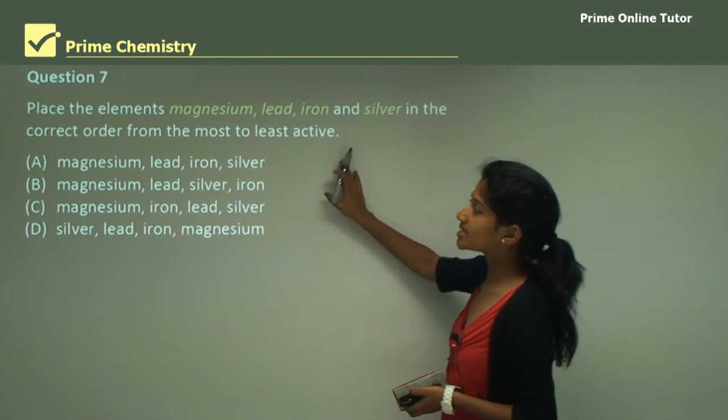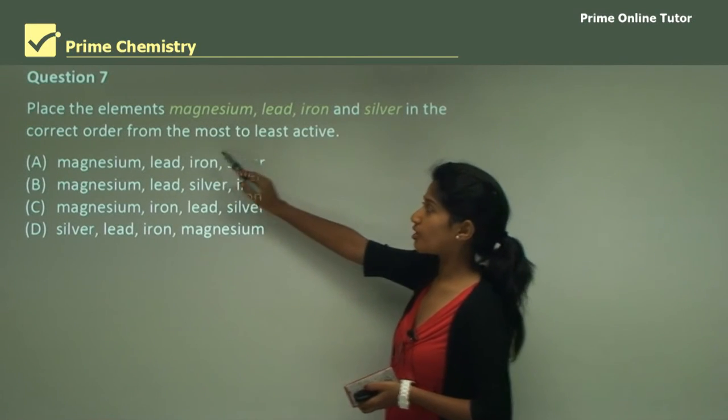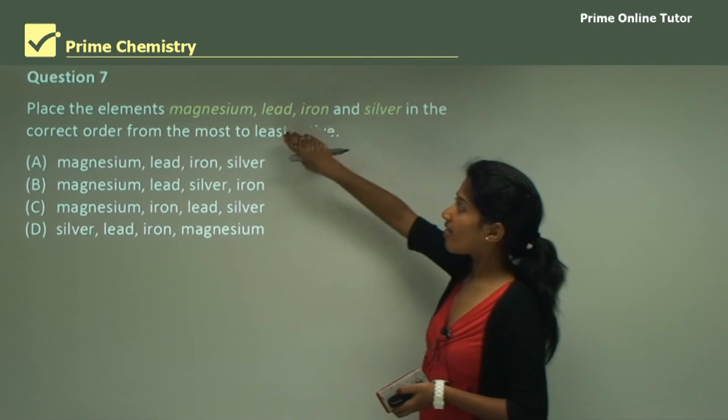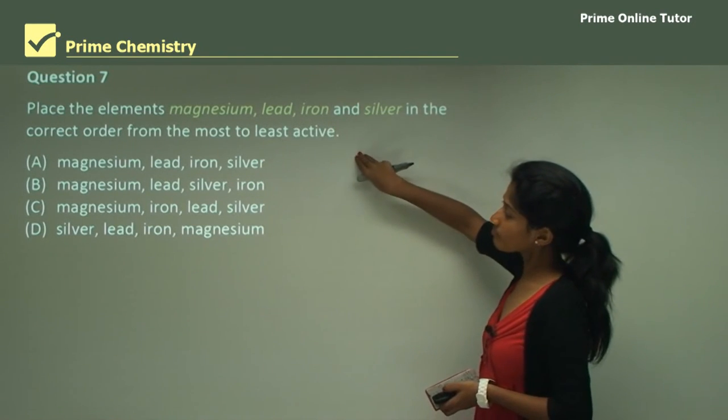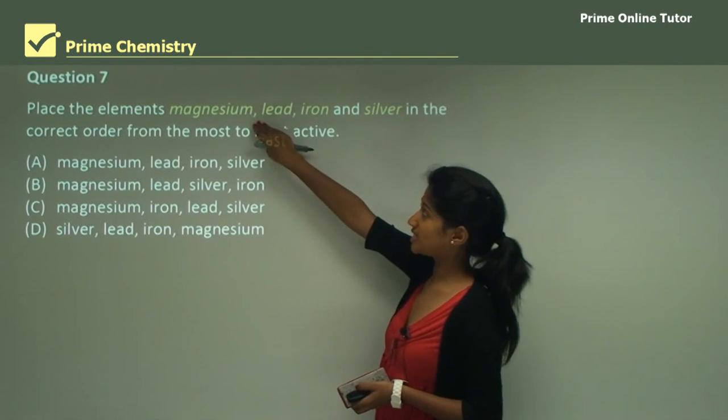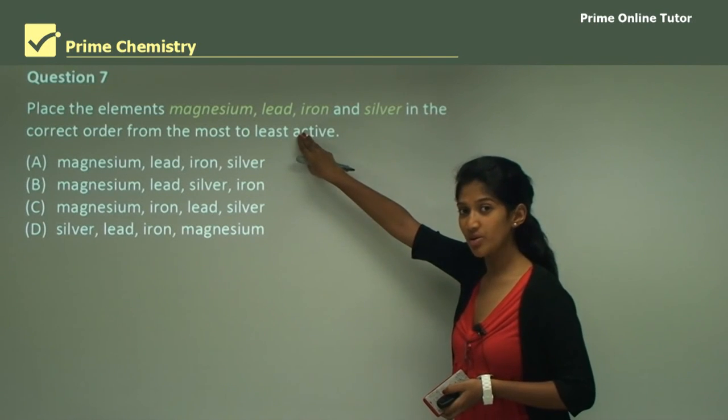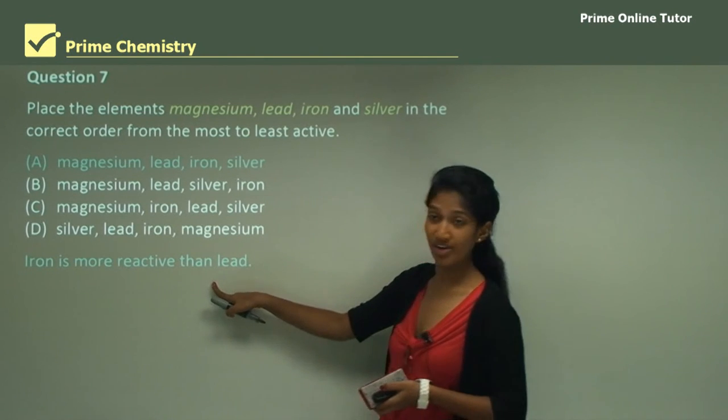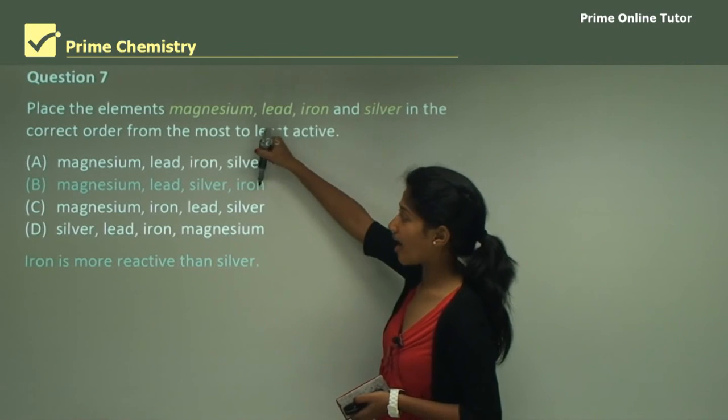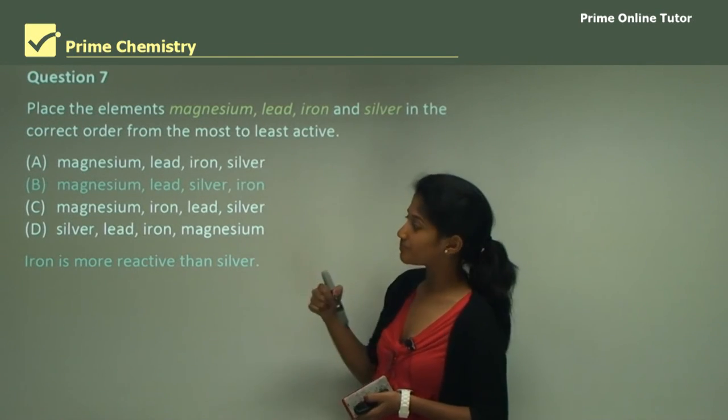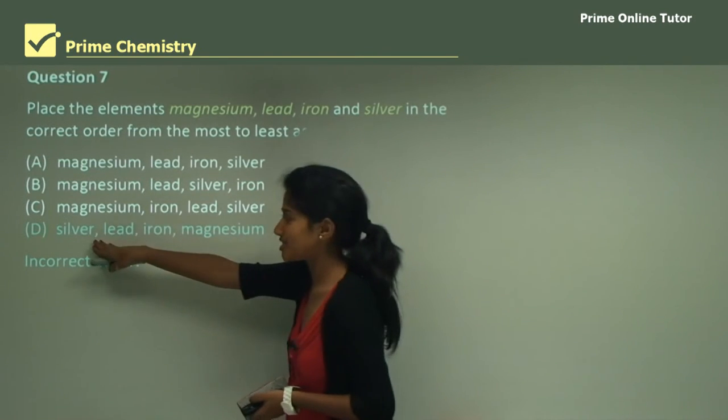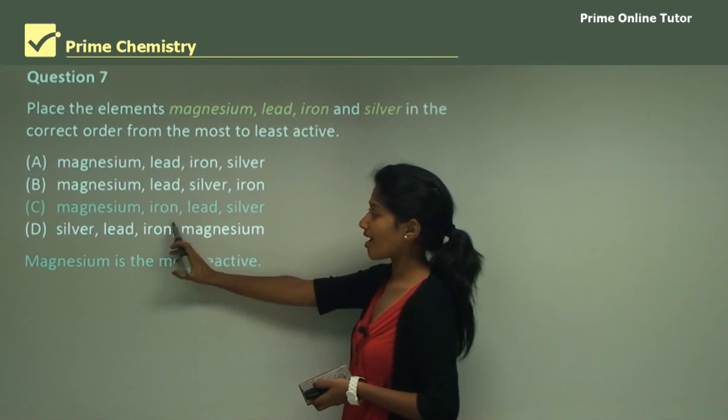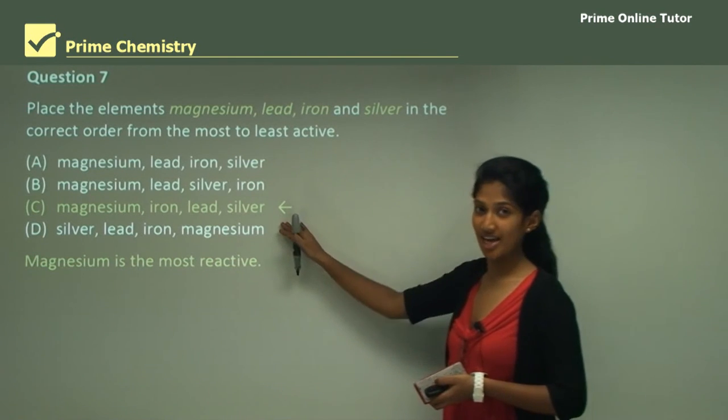Question 7. Place the elements magnesium, lead, iron and silver in the correct order from the most to least active. Looking at them, we know that silver is an inert metal so it doesn't react at all. Magnesium is in our second group so it's quite reactive. We know iron is more reactive than lead because lead is somewhat less reactive. Option A is incorrect because we know that iron is more reactive than lead. Option B is incorrect because iron is more reactive than silver. Option D is the wrong order because silver is not more reactive than lead, iron or magnesium. It's supposed to be the other way around, which is C, because magnesium is the most reactive then comes iron, lead and silver. Therefore C is the correct answer.